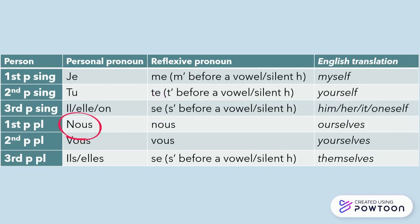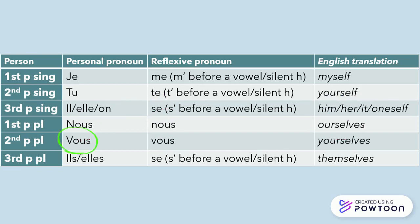For NOUS, the reflexive pronoun is actually the same — NOUS — meaning 'ourselves.' For VOUS, same reflexive pronoun — VOUS — meaning 'yourself.' And for ILS/ELLES (plural), we keep SE or S', meaning 'themselves.'